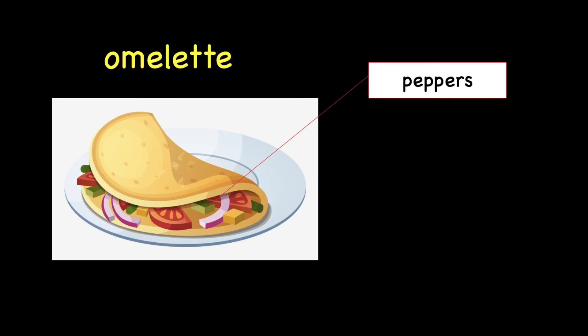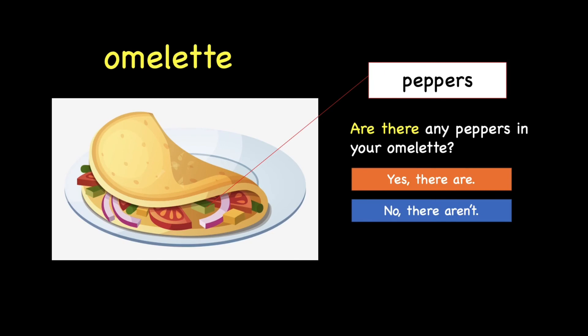Peppers. Are peppers countable? We can see one, two, three, four, five — yes, we can count the peppers. So, peppers are countable, and since there is more than one, we use: "Are there any peppers in your omelette?" If there are, you can say: "Yes, there are." If there aren't, you say: "No, there aren't." So, are there any peppers in your omelette now? Correct — there are peppers in your omelette.